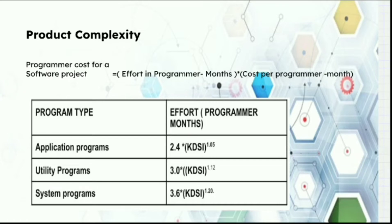Product Cost for a Software Project equals Effort in Programmer-month into Cost per Programmer-month. We have three program types: Application Program, Utility Program, and System Program.